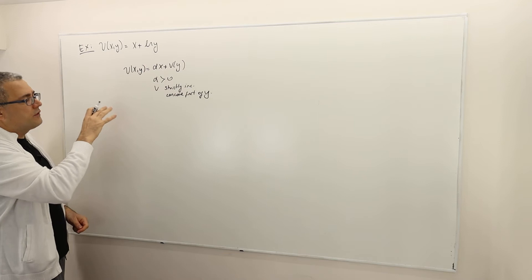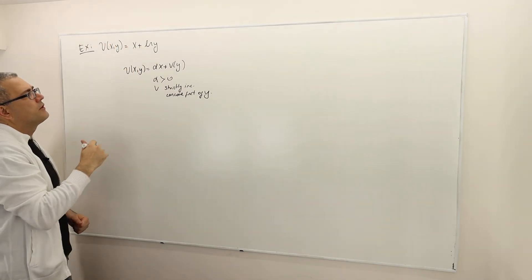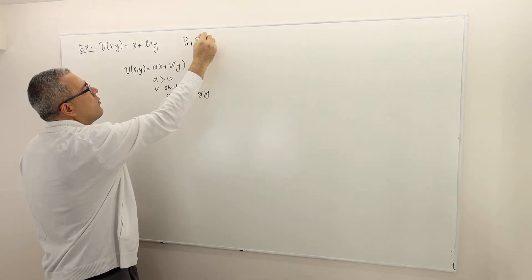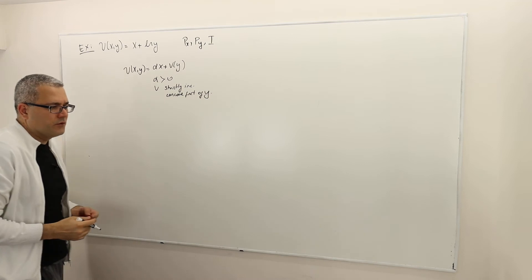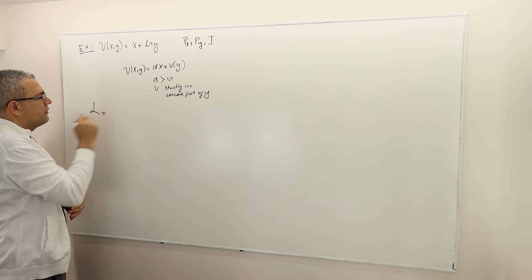The question that we have is to maximize this utility function subject to the budget constraint. I assume that the price of good x is px, price of good y is py, and the income is i as usual. So how do we do that? Well simple, write down the Lagrangian.